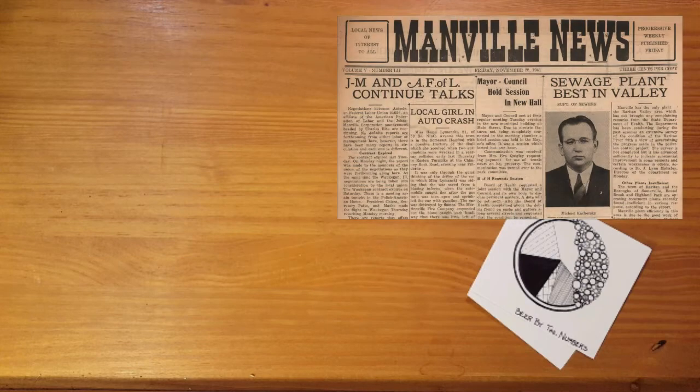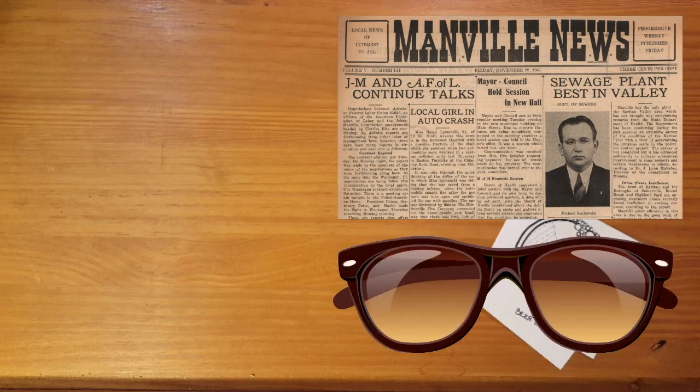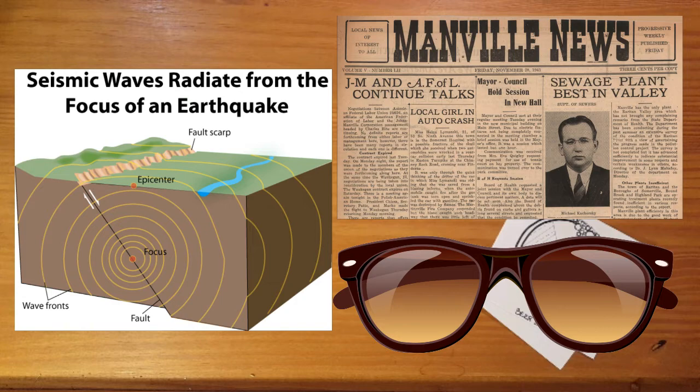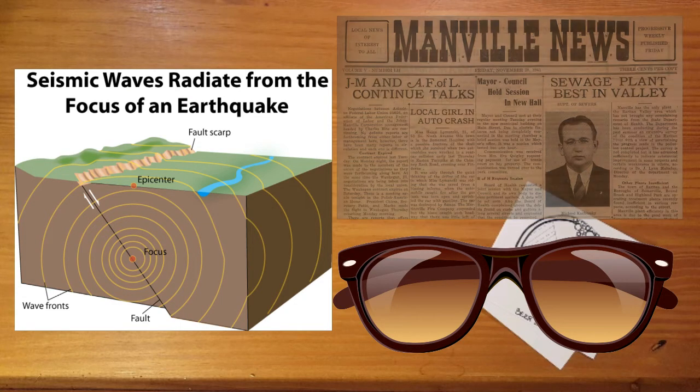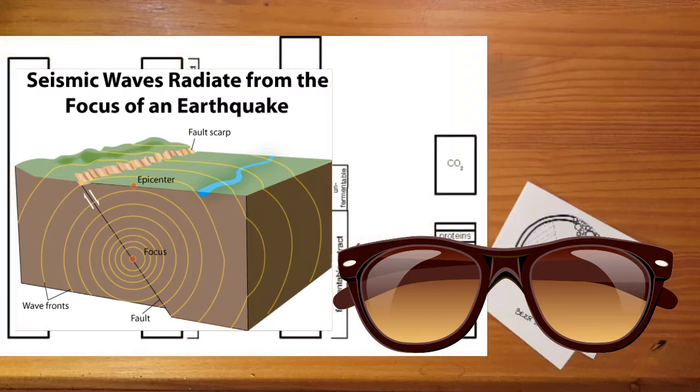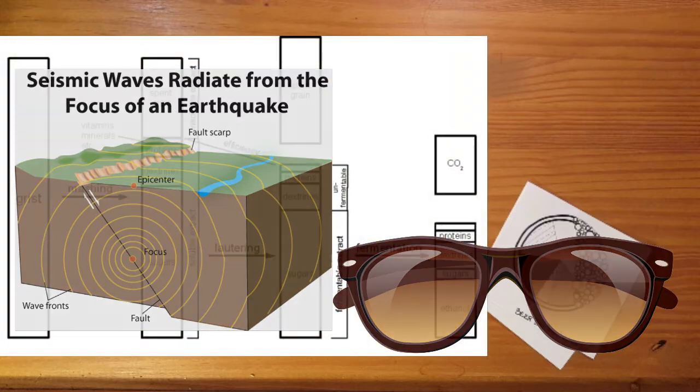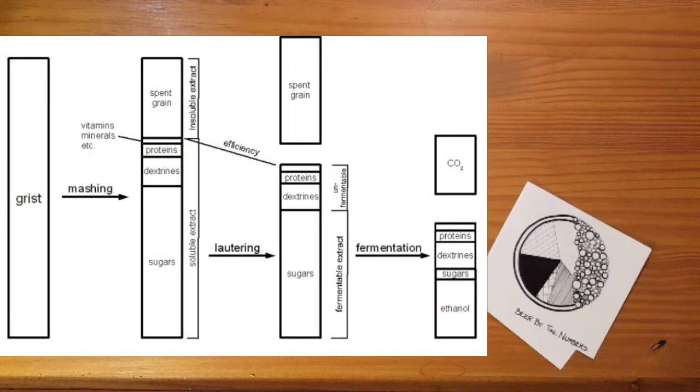Light fades the intensity of old newspapers, sunglasses fade over time, and even earthquakes attenuate as the seismic waves radiate from the epicenter. So when we look for a process of attenuation, we need not look any further than the most important process in brewing, fermentation.